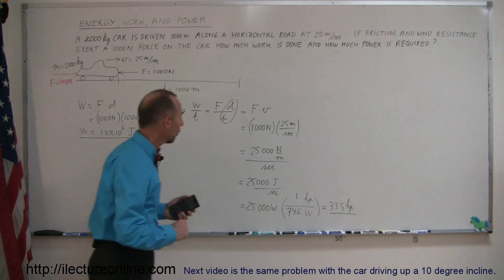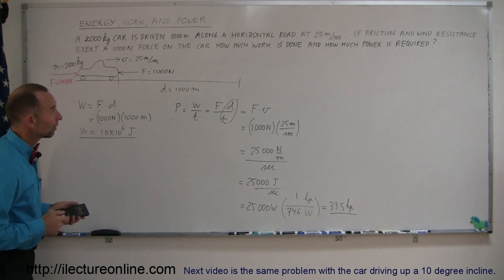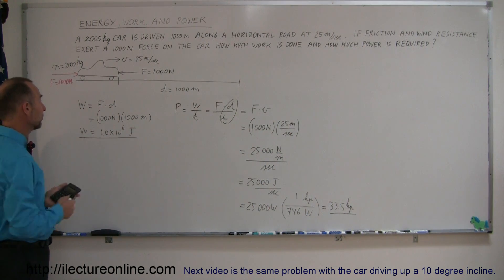There. So, that's the power required to move the car at 25 meters per second under the friction and wind conditions that we set up for the problem. So, that's fairly straightforward.